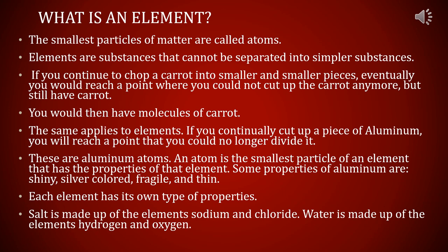Before moving on to mixtures, we should understand what is an element and what is a compound. The smallest particle of matter is called an atom, which we have already studied. Elements are substances that cannot be separated into simpler substances. You cannot go beyond the atom — atom is the smallest possible substance. So elements are substances that cannot be separated into smaller substances. For example, 24-karat gold is highly pure, having only a single type of atom, that of gold.